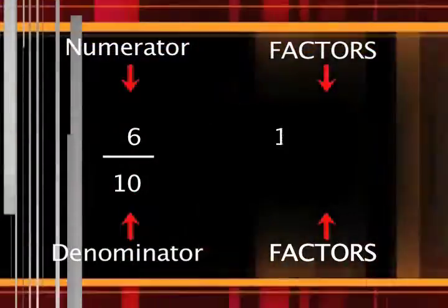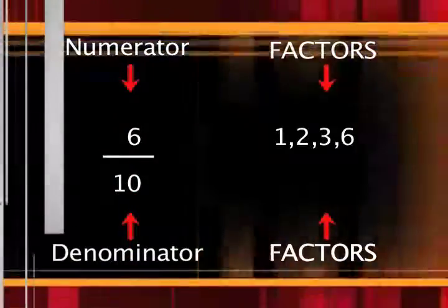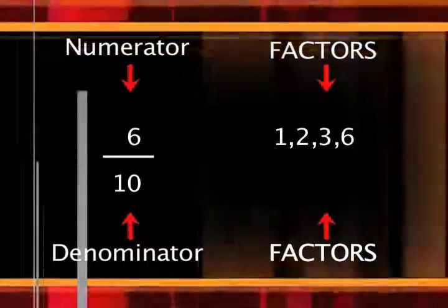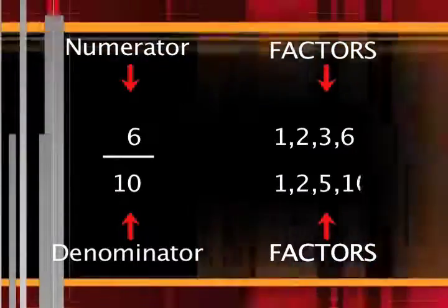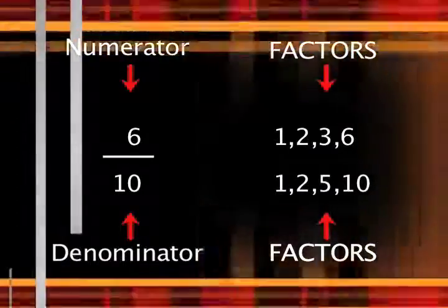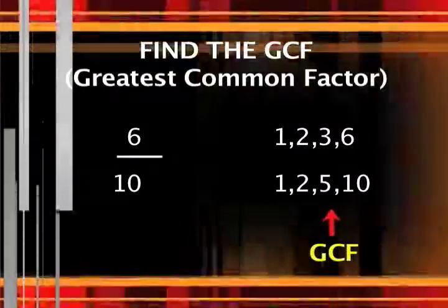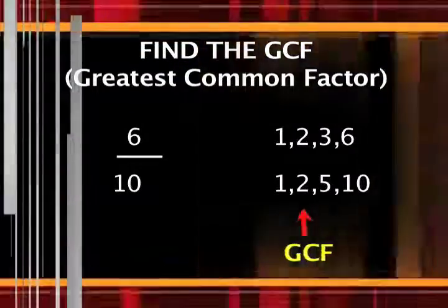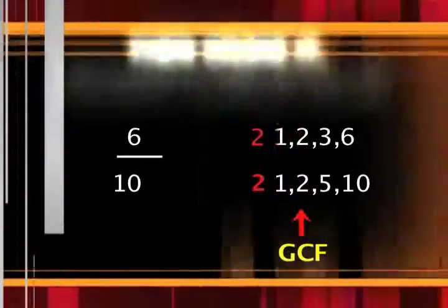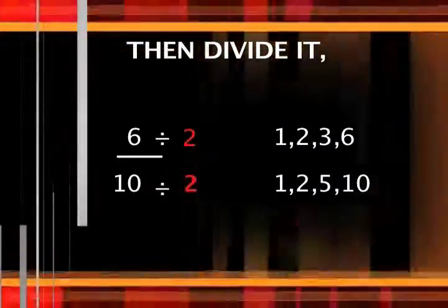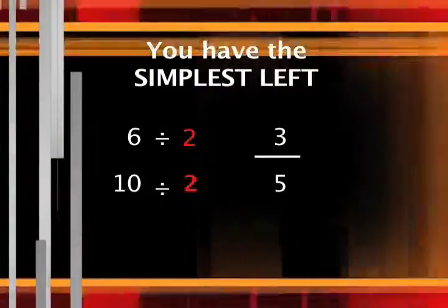List the factors of the numerator. What? List the factors of the denominator. Find the GCF. Oh yeah, then divide it and you have the simplest form.